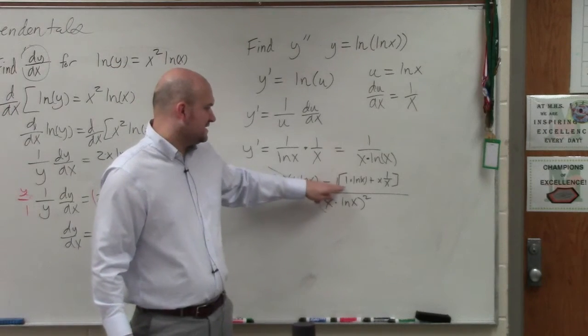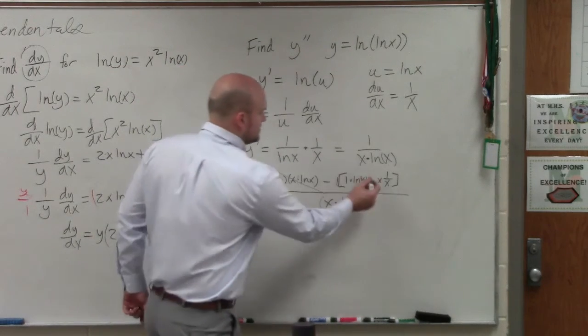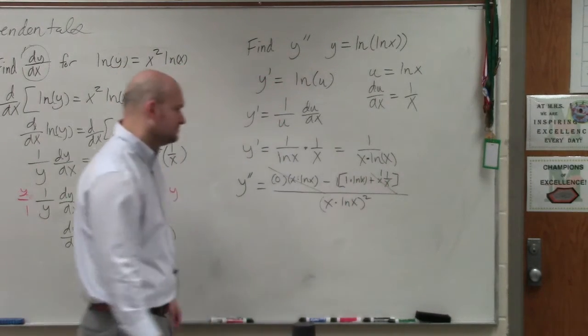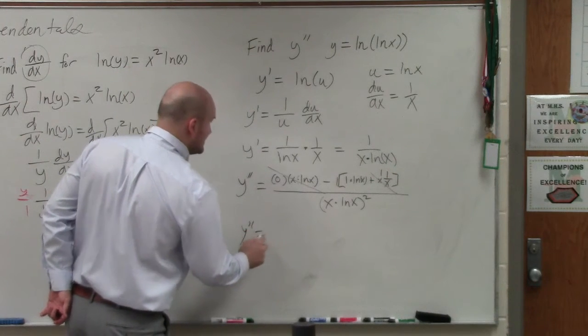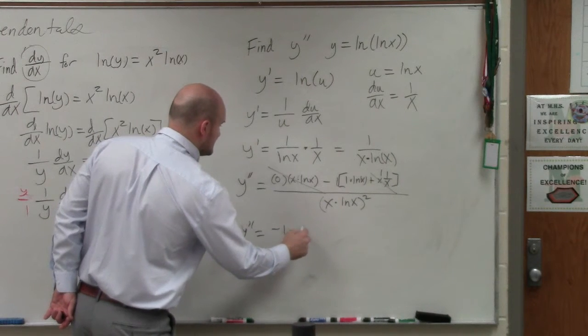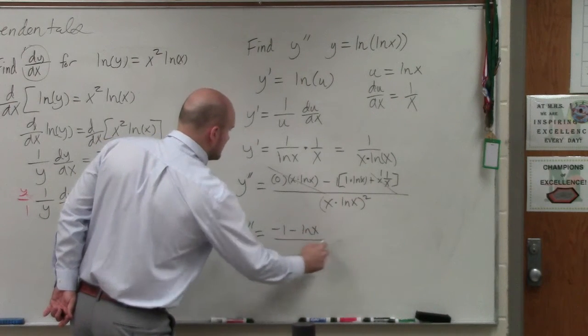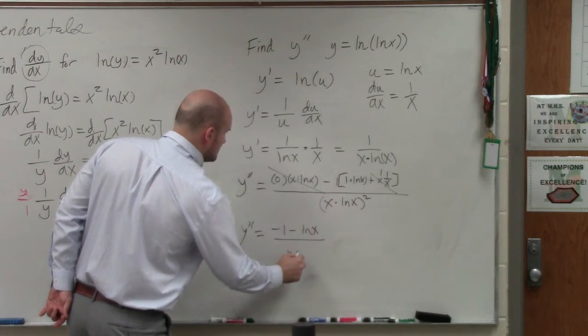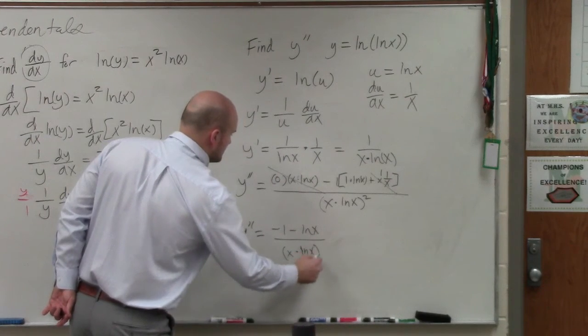And now we can simplify this, obviously is going to go to 0. Over here, I'm basically going to have this is going to divide to 1. So y double prime is equal to negative 1 minus ln of x over x times ln of x squared.